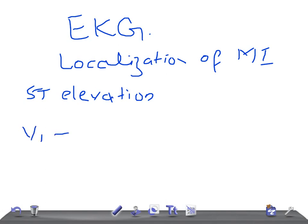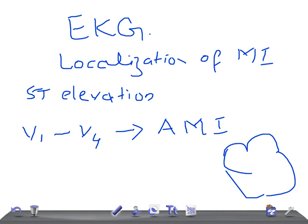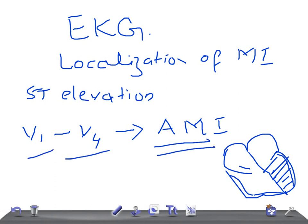ST segment elevation in V1 to V4 — where has the myocardial infarction taken place? It's anterior myocardial infarction. If I draw and show you: this is the septum and these are the ventricles, right and left. If this anterior area has been infarcted, we call it anterior myocardial infarction, and you look for ST segment elevation in V1 to V4.